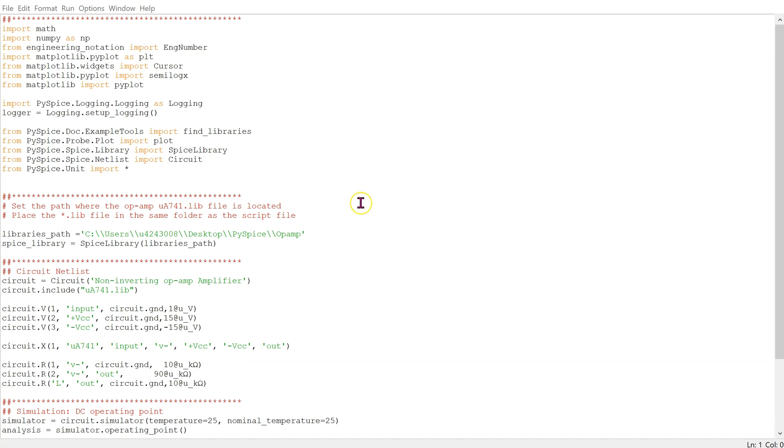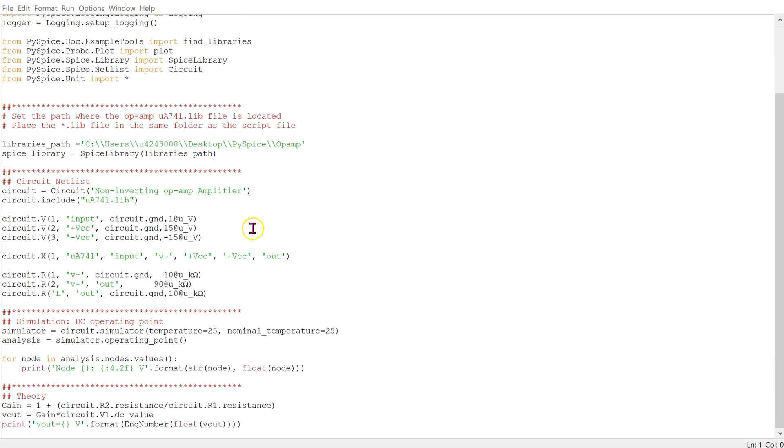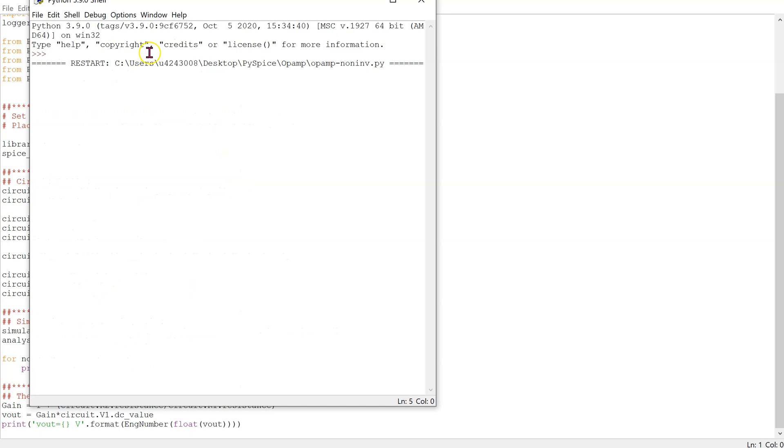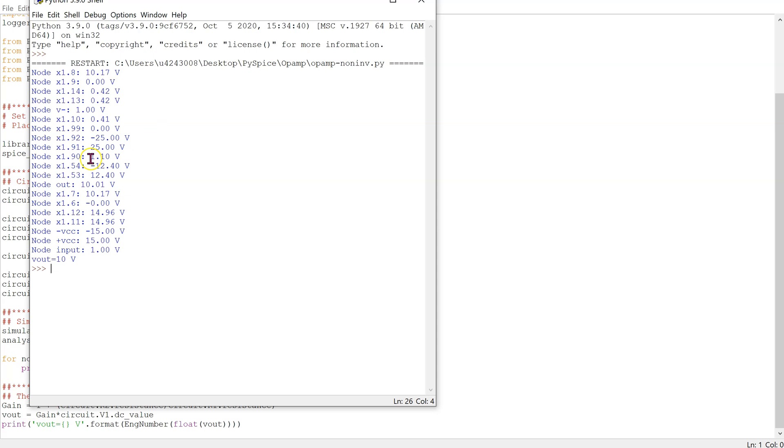The complete code is shown here and is also available in the video description. We have the standard declarations at the top. Next is the circuit netlist that we discussed. These commands invoke the DC operating point simulation and show the node voltages. Finally, we can do the theoretical calculations side by side with the simulations. When we run this code, we obtain all the node voltages, including the node voltages inside the op-amp macro model. This is really cool. We can see that the input voltage is one volt. The voltage at the negative pin of the op-amp is also one volt. The voltage at the output node is 10.01 volts, which matches the theoretical prediction very well.